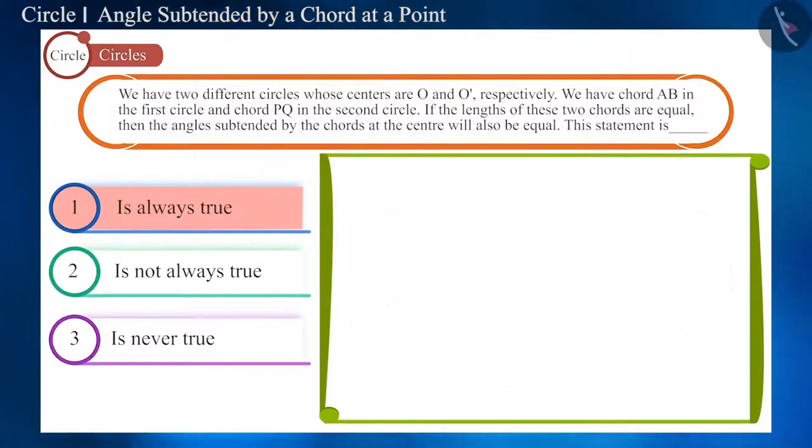In the second situation, when both circles are congruent, i.e., when the radii of both are equal, then will both these angles also be equal?